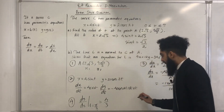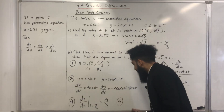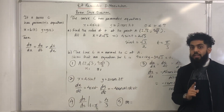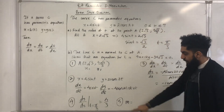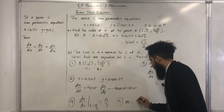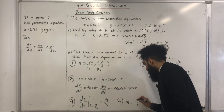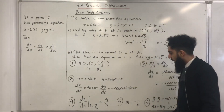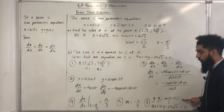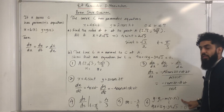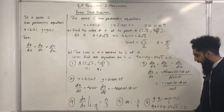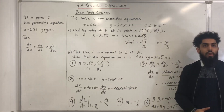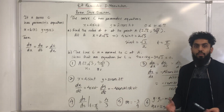Step number 5: the gradient of the normal, m, is just the negative reciprocal of the gradient of the tangent. So the negative reciprocal of 4 over 3 is minus 3 over 4. The final step is to put x1, y1 and m into y minus y1 equal m bracket x minus x1, rearrange, and end up with 9x plus 12y minus 34 square root 3 equal to 0, as required.